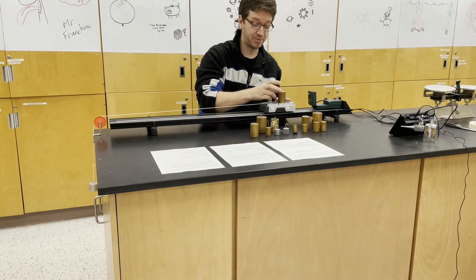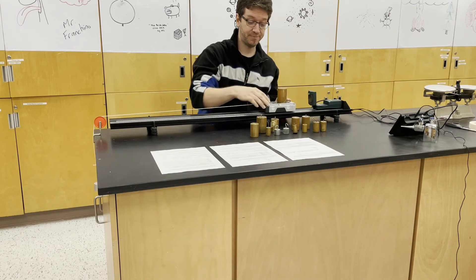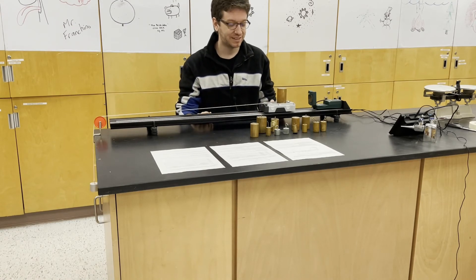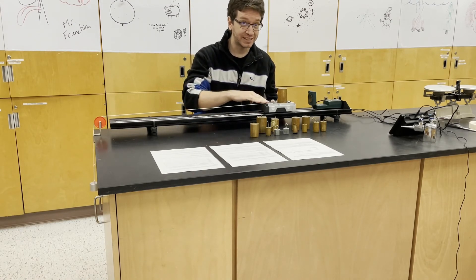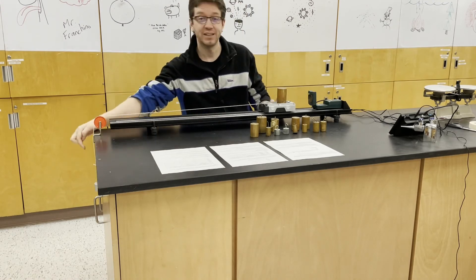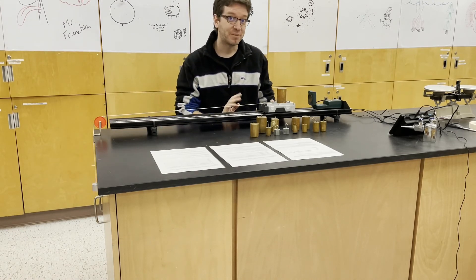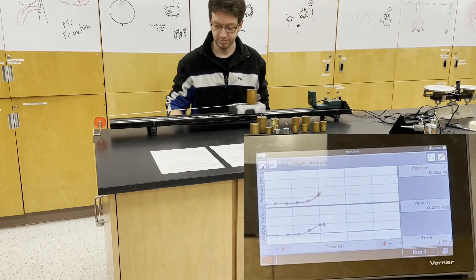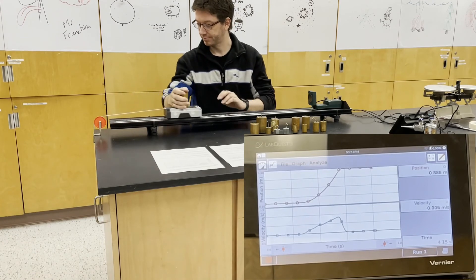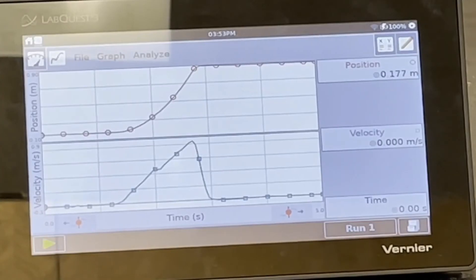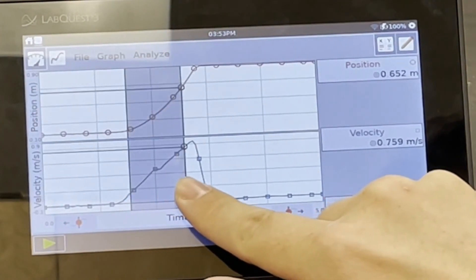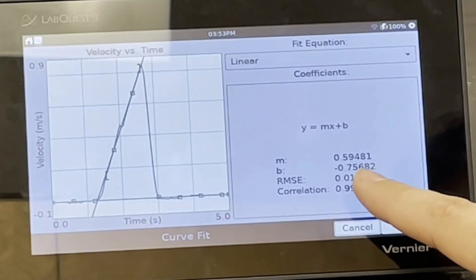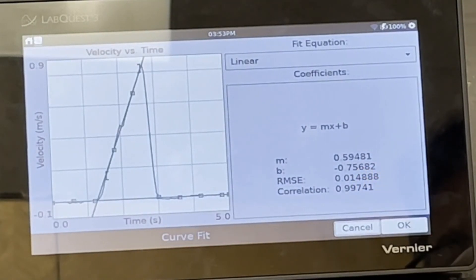Now we add another 500 grams. So that's a total of 1 kilogram added to the 260 gram cart. So remember the total mass that's being accelerated is 260 grams plus a kilogram plus our 100 gram mass. That's the mass of the system that's being accelerated. So here our acceleration is 0.59481 meters per second squared.